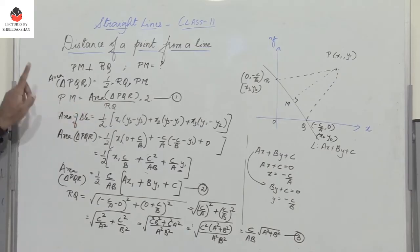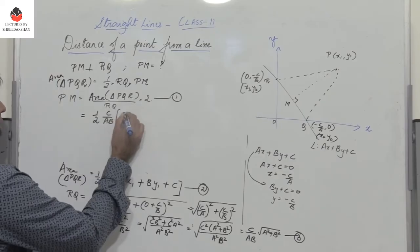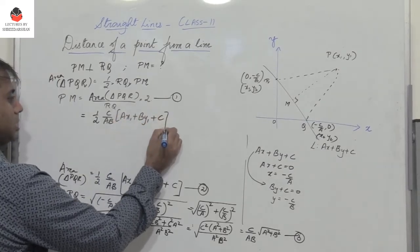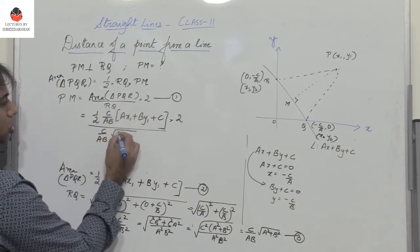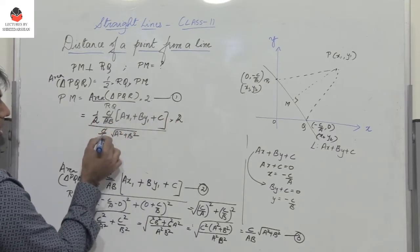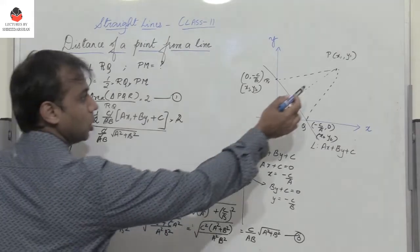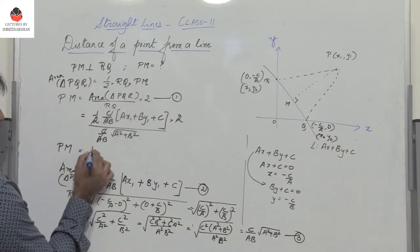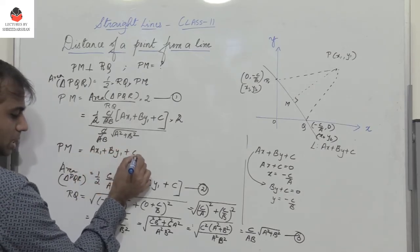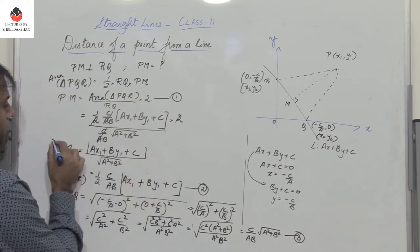Substituting area (equation 2) and RQ (equation 3) into PM = 2 × area / RQ: PM = [2 × ½ × (C/AB) × (Ax1 + By1 + C)] / [(C/AB) × √(A² + B²)]. The factors of 2, ½, and C/AB cancel, giving PM = |Ax1 + By1 + C| / √(A² + B²).